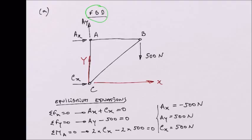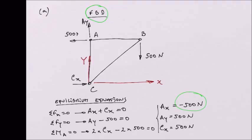Solving this system of equations, we get: vertical reaction AY equals 500 N; horizontal reaction CX equals 500 N; and substituting CX into the first equation, we get horizontal reaction AX equals minus 500 N. The negative sign means our initial orientation was wrong — AX should be pointing to the left, with an absolute value of 500 N.